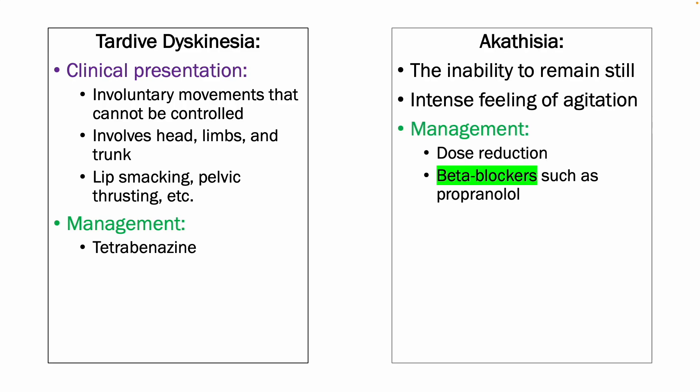Akathisia is the inability to remain still. Patients feel very agitated and need to move around. This can be treated with dose reduction or beta blockers such as propranolol.